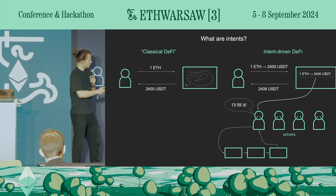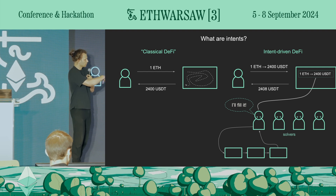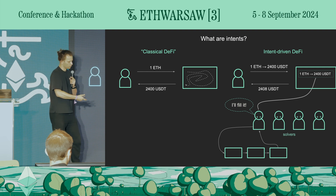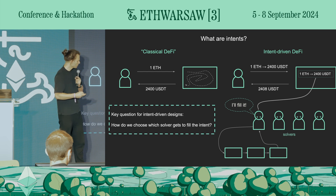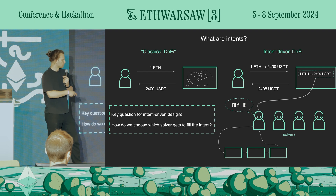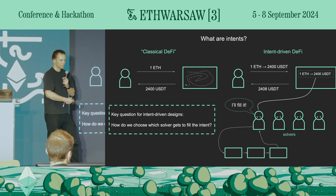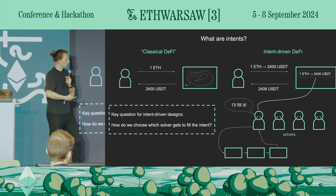This is a very competitive market where, instead of going to just one smart contract, the entire chain is available and there is competition among solvers to use everything available to fill the intent or maybe even get more. Usually the idea is that the user should get slightly more than they asked for — for example, 2,408 USDT instead of 2,400. The key question in intent-driven designs is how we choose which solver gets to fill the intent, because we want a game that promotes solvers with better solutions while not incurring too much additional gas cost.